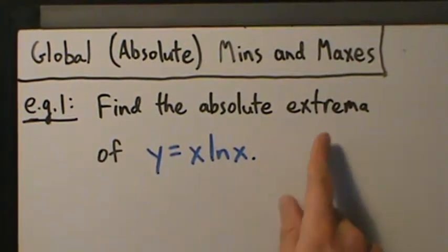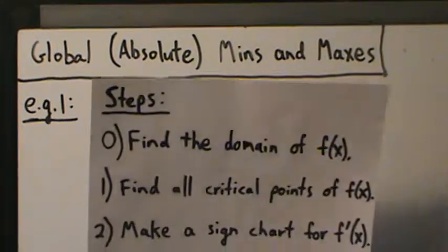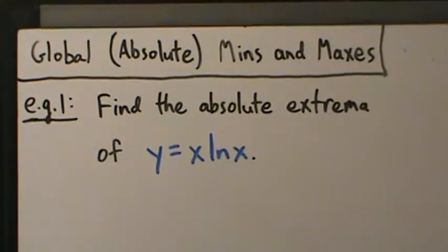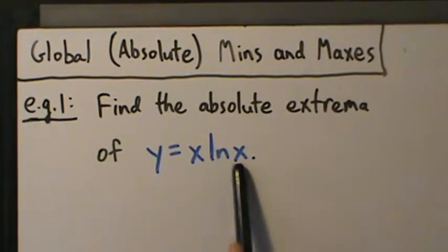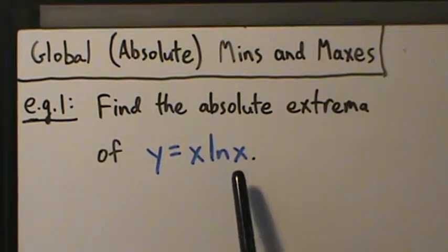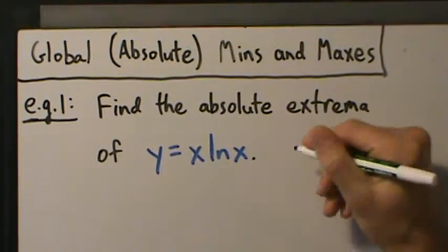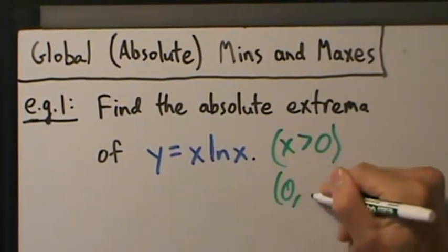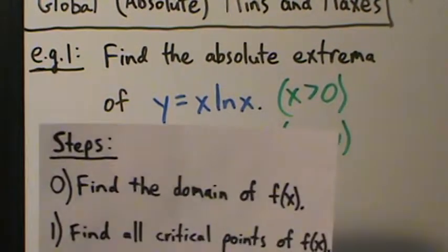Find the absolute extrema — remember that means min's and max's — of y equals x times the natural log of x. Step zero: find the domain of the function. What's the domain here? Well, natural log of x — anything you take a log of, no matter what the base is, has to be positive. So x has to be strictly positive, can't be zero or negative. We don't get any restrictions from the x term, so x has to be greater than zero, or in interval notation, zero to positive infinity.